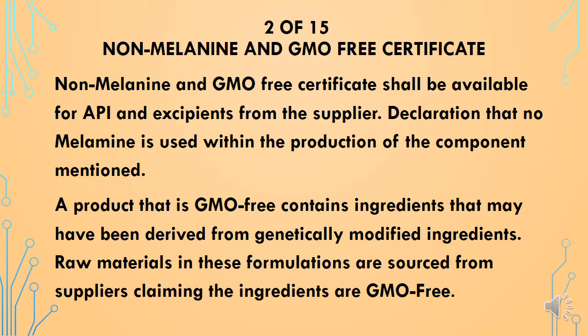Document No.2: Non-Melamine and GMO Free Certificate. This certificate shall be available for API and acceptance from the supplier, along with a declaration that no melamine is used within the production of the component mentioned. A product that is GMO free contains ingredients that may have been derived from non-genetically modified sources. Raw materials in these formulations are sourced from suppliers claiming the ingredients are GMO free.